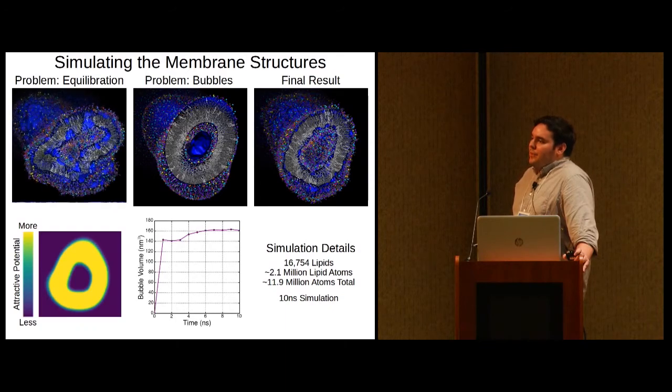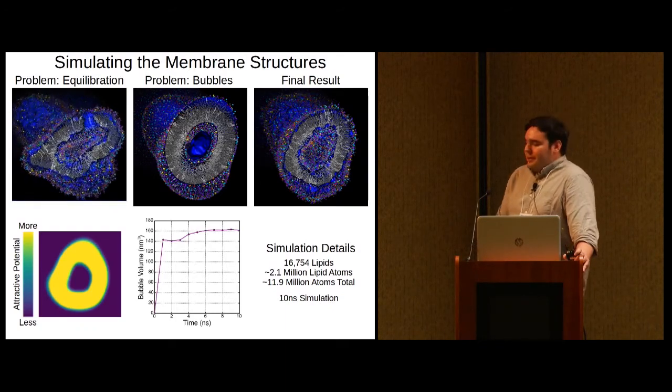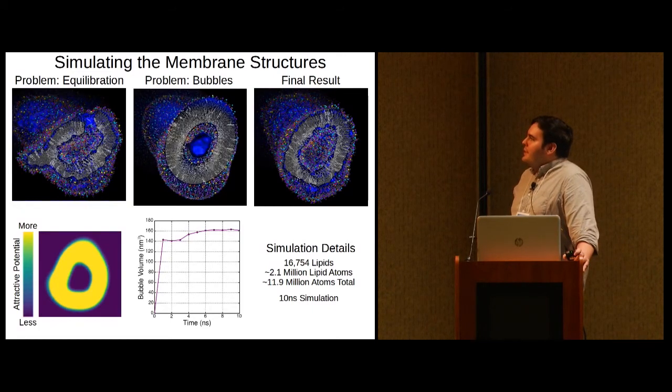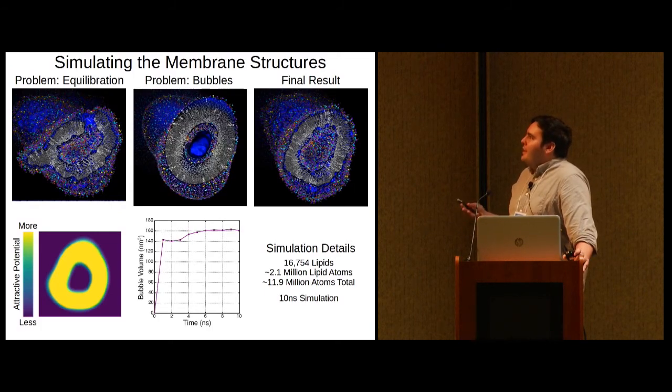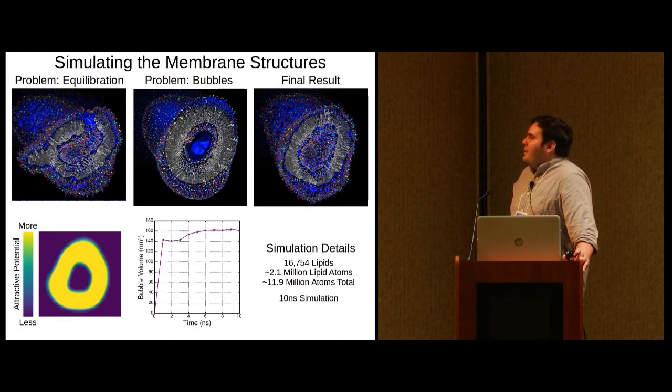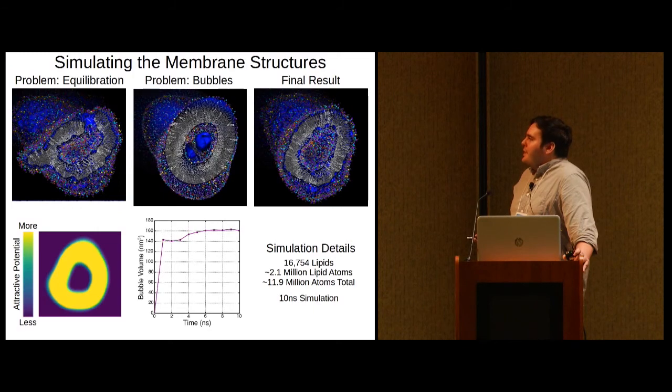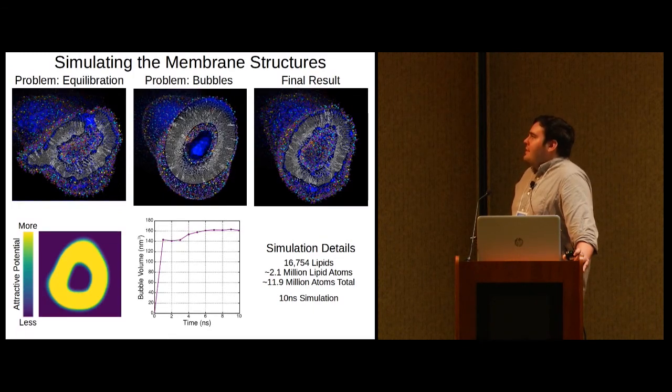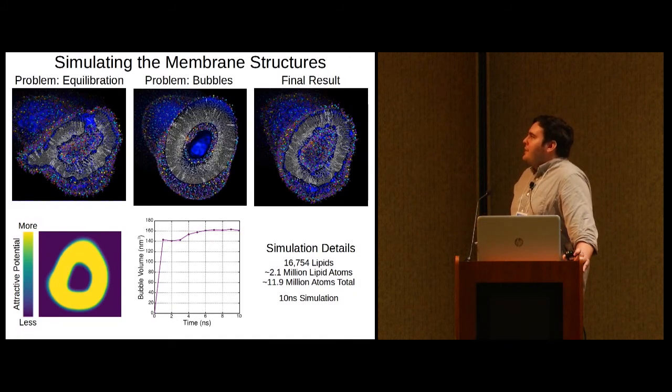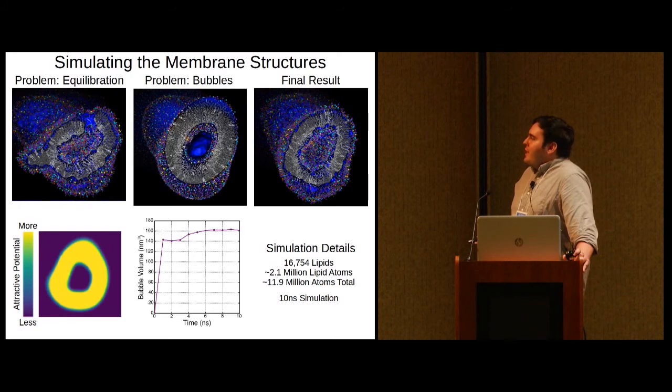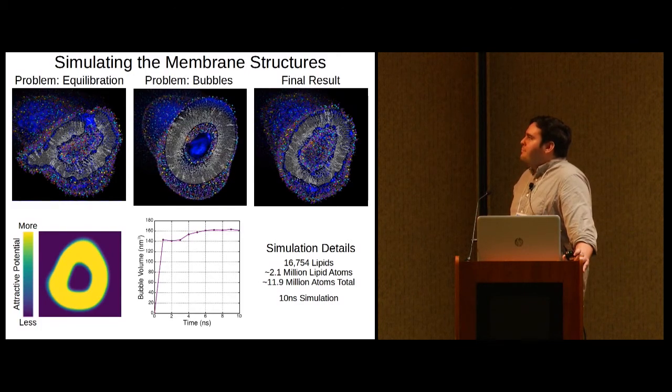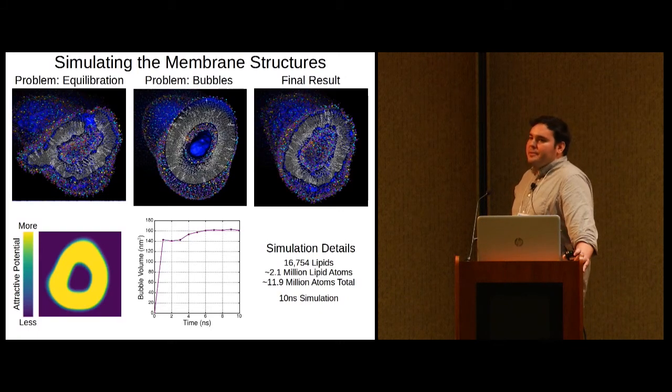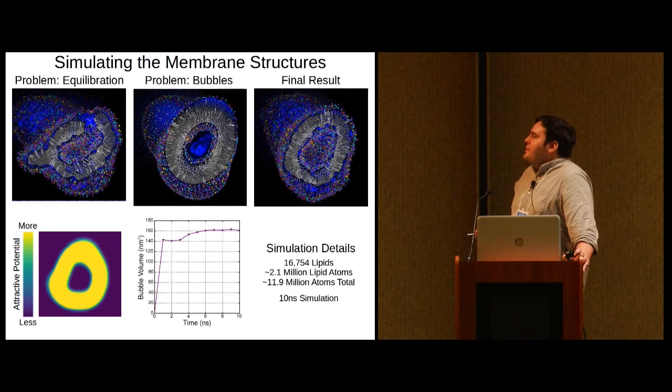So XMIS Builder has a custom technique for solvating, ionizing, and equilibrating the membrane structures. For equilibration, the idea is that the shape of the membrane is held very rigidly using grid forces with a cross-section that looks something like this. This allows the lipids and the aqueous environment to equilibrate to the desired shape of the membrane. During this process, water molecules will seep into the head group region of the membrane structure, which is expected from simulations of other membrane systems.